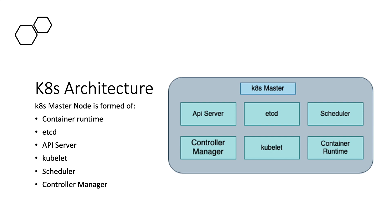Every master node has these components installed: API server, etcd, scheduler, controller manager, container runtime, and kubelet. The API server is a RESTful-based infrastructure, secured with every connection. It is the main tool we use to communicate with clusters and nodes. It has different interface implementations so different tools and libraries can communicate effectively. It interacts with worker nodes and provides them with required information — it's our main communication gateway from the CLI and the main way the master node communicates with all worker nodes.